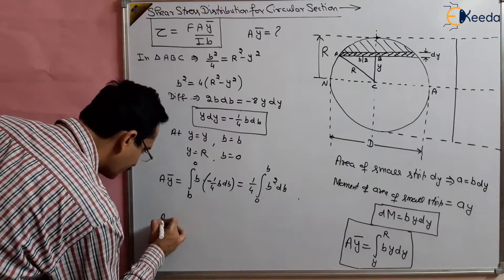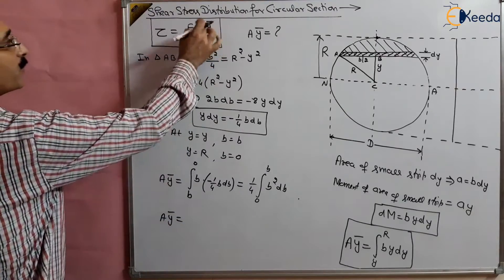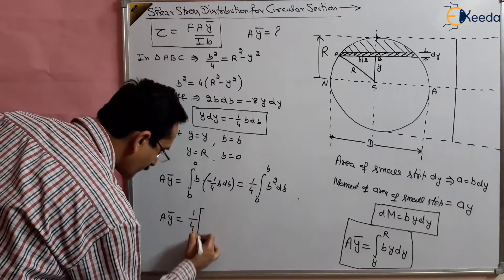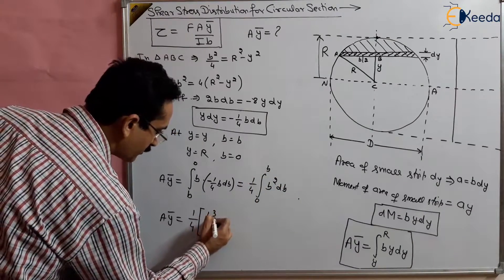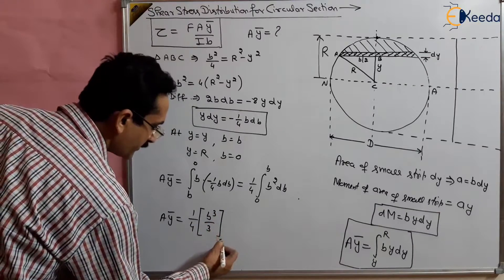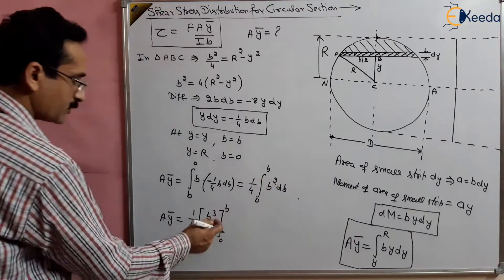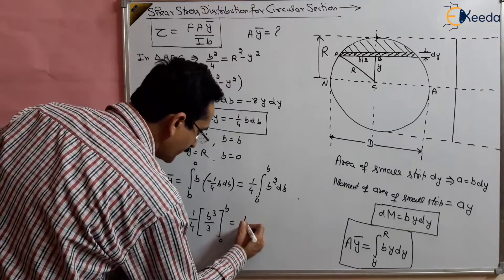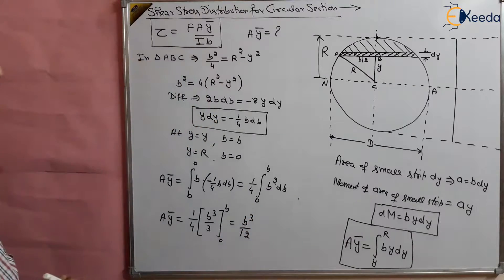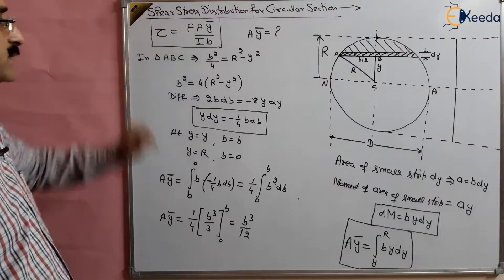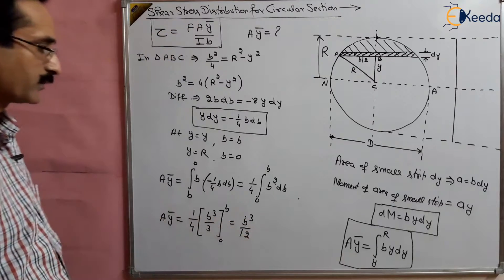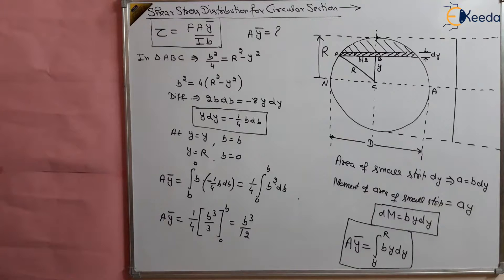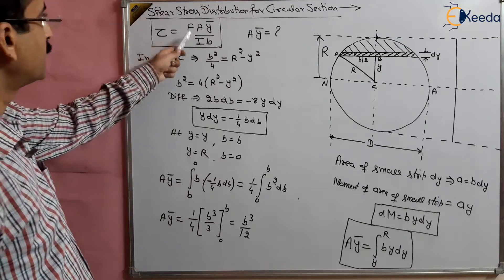So Aȳ, which was difficult to find for a circular section, can now be obtained. Integrating (1/4)·b² from 0 to b gives b³/12. So Aȳ = b³/12.